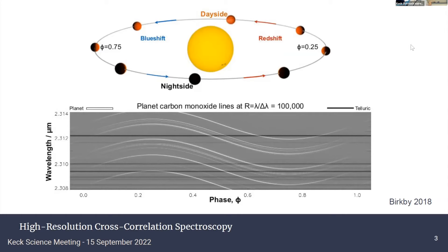There are a couple of benefits to this over transit characterization. One is that you don't actually need a transit, so you have more flexibility in targets. Two is that you're more flexible in your pressure range probed and the longitude range probed — you're not just looking at the atmospheric scale height near the terminators. You can look at the day side, the night side, look in between, and start to get a sense of the 3D structure of these exoplanets directly.